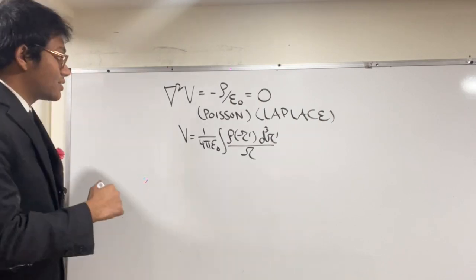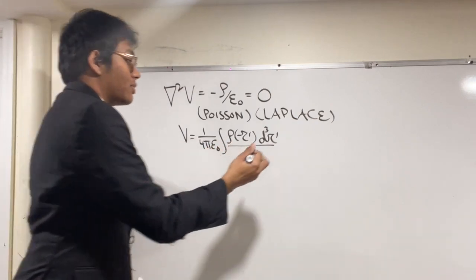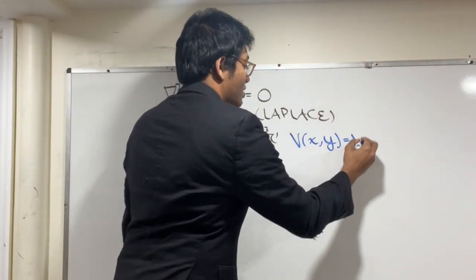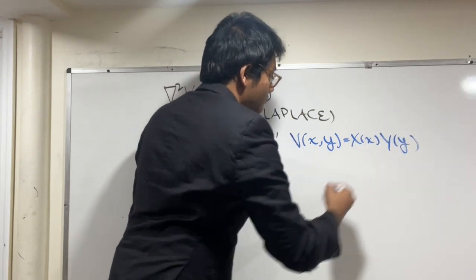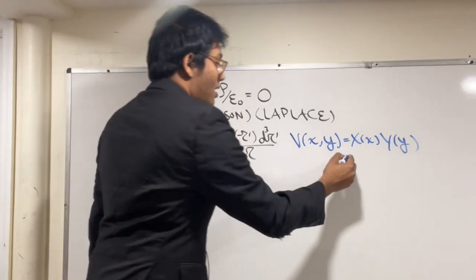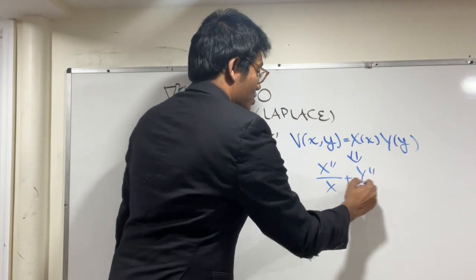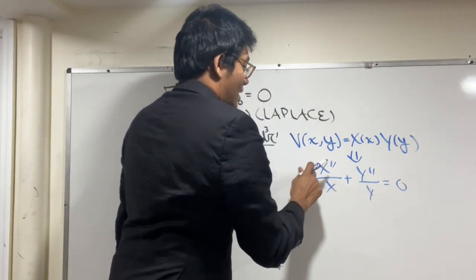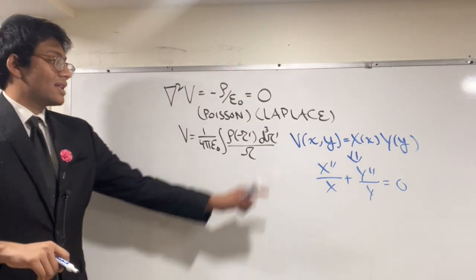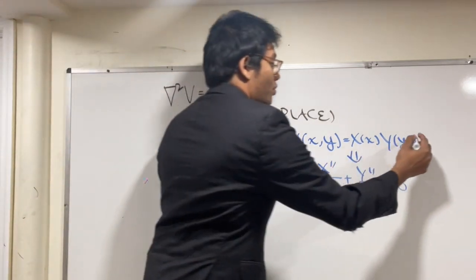Laplace's equation has zero on the right-hand side instead of negative rho over epsilon naught. We solve it by assuming that V, the electric potential, is a separable function — that V may be separated as a function of X and a function of Y. Plugging that in gives us X double-prime over X plus Y double-prime over Y equals zero. This applies for two coordinates, but can be extended to three by adding a term Z double-prime over Z.